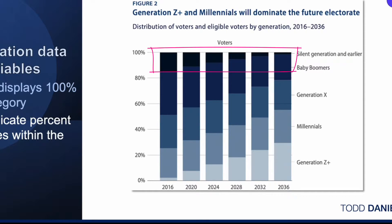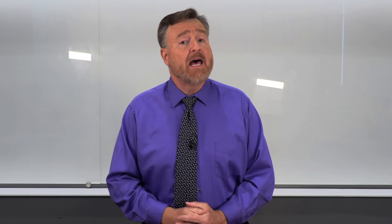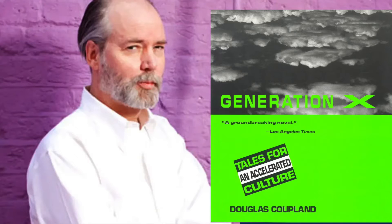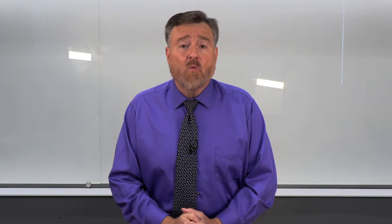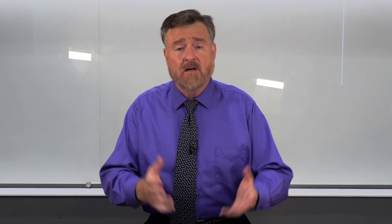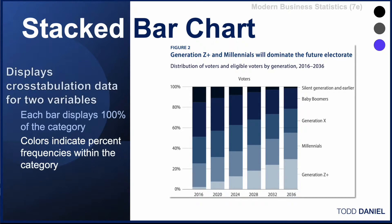The darkest bar at the top of the stacked bar chart is the silent generation — this would be my grandparents' generation. My parents were baby boomers and I would be in Generation X, actually drawn from the title of a book by Douglas Coupland that I remember reading back in the early 90s before I even knew we were Generation X. The Millennials were born around the time of the change of the millennium, around the year 2000, and Generation Z follows them. If you are a typical college student beginning your college career around age 18, you are probably in Generation Z.